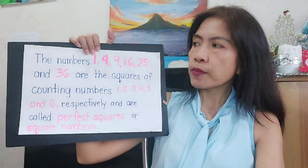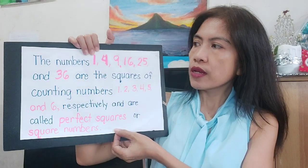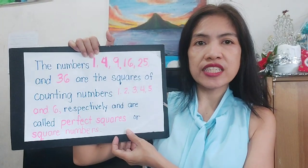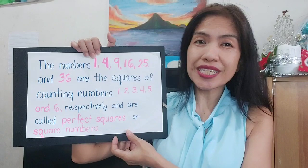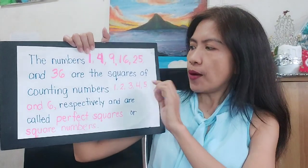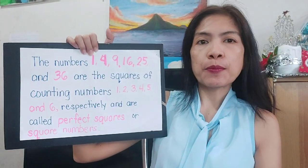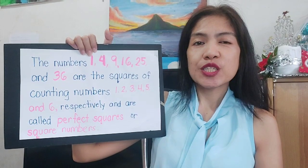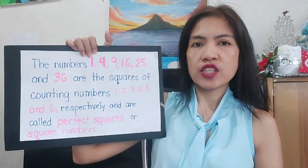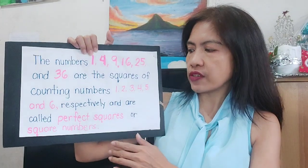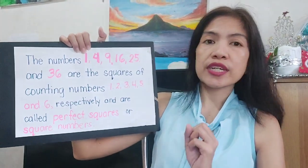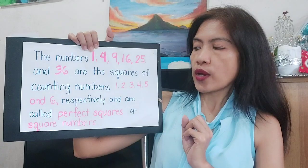So just remember this: the numbers 1, 4, 9, 16, 25, and 36 are the squares of counting numbers 1, 2, 3, 4, 5, and 6 respectively, and are called perfect squares or square numbers.